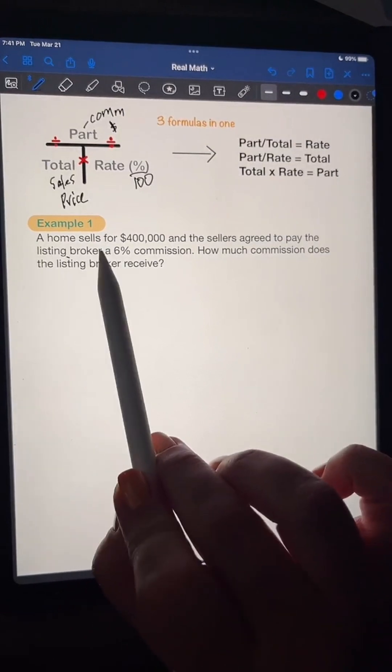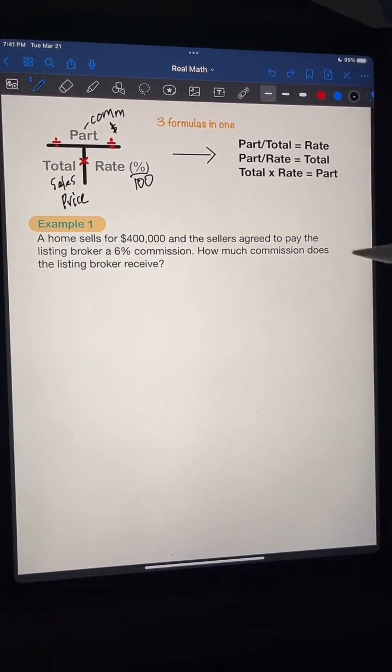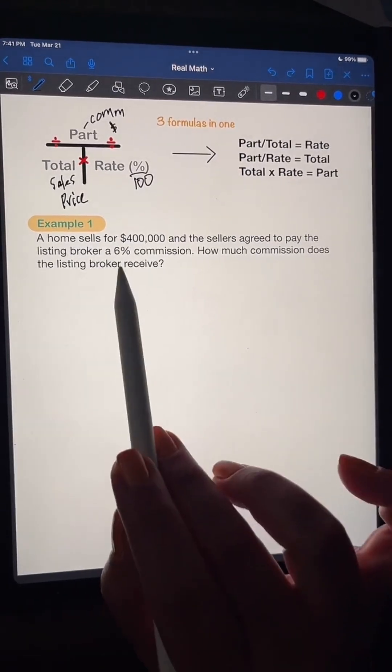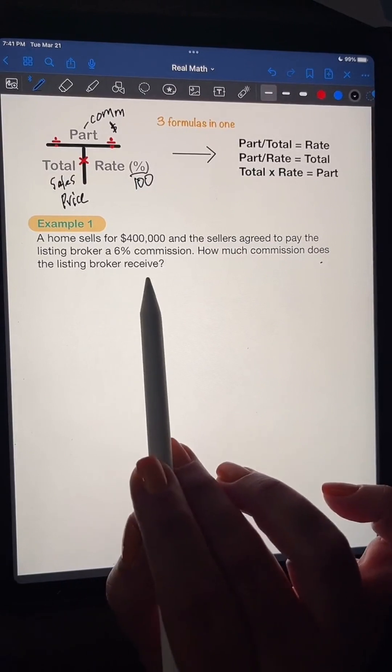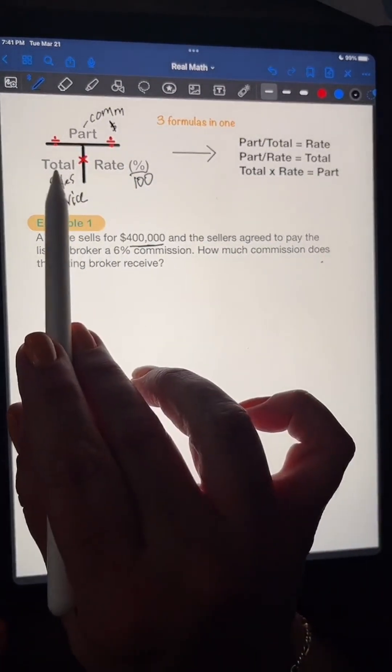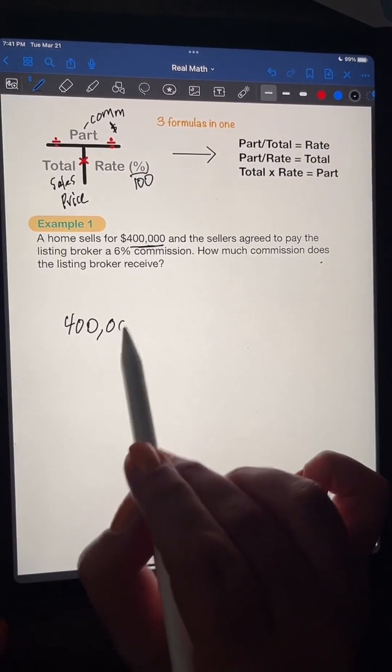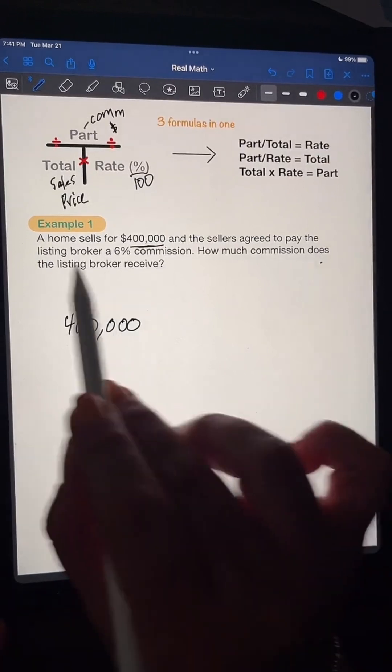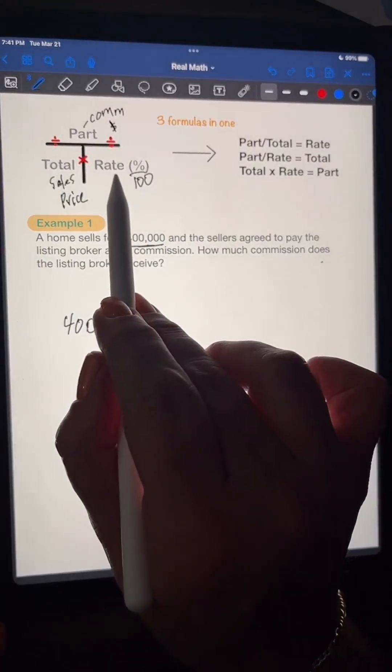So let's see here. Here it says a home sells for $400,000. And the sellers agreed to pay the listing broker a 6% commission. How much commission does the listing broker receive? All right. So here we have $400,000. That's this here. Total. $400,000. And the sellers agreed to pay the listing broker a 6% commission. So that's here. Rate. So we're going to multiply.